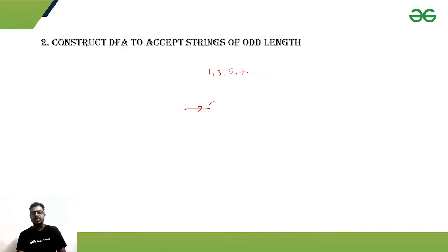That means if you are getting a zero length string, that won't be accepted. But if we are getting another symbol after that, that means we are getting some odd length string. For the starting case, it is a length one string, so that means it will be accepted.